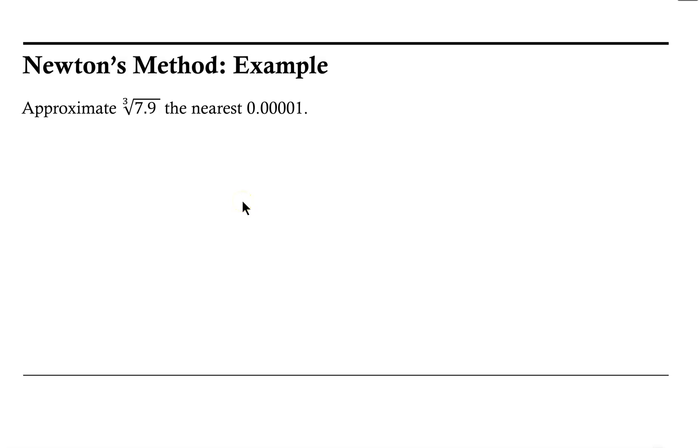Welcome! Let's take a look at using Newton's method to find the approximate value of the cube root of 7.9 to the nearest 0.00001.